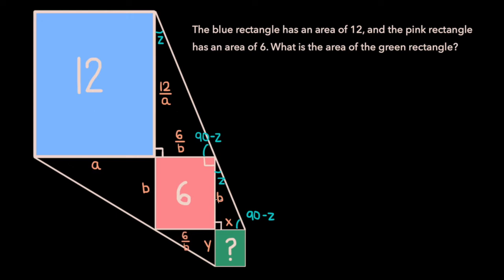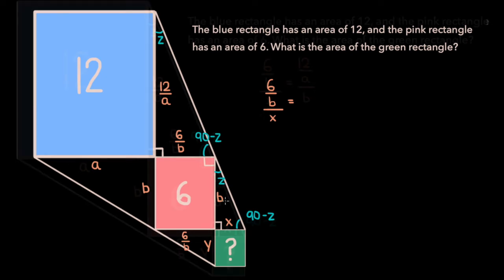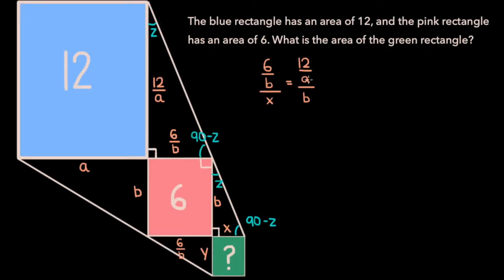Now since these two triangles are similar, we know the ratio of the sides opposite the angle z in both triangles must equal each other, so 12 over a over b. Now if we cross multiply, we get 12 over a times x, so 12x over a equals 6 over b times b, so 6.